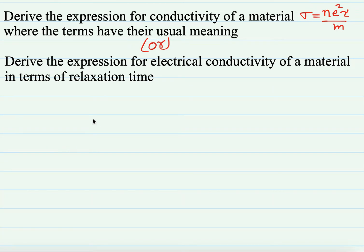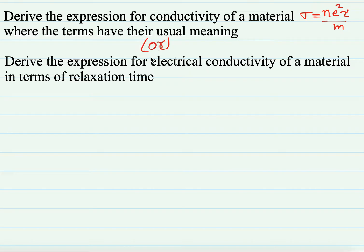Welcome to Srihan Academy YouTube channel. In this video we'll discuss one important five marks question from the chapter current electricity. We'll derive the expression for conductivity of material: sigma is equal to ne squared tau by m, where the terms have their usual meanings. Alternatively, derive the expression for electrical conductivity of a material in terms of relaxation time.